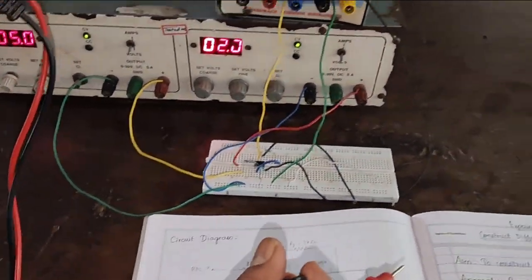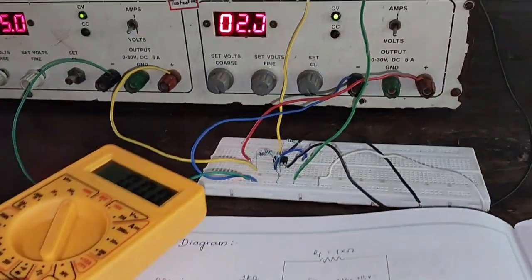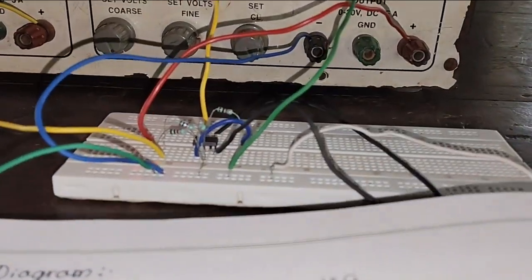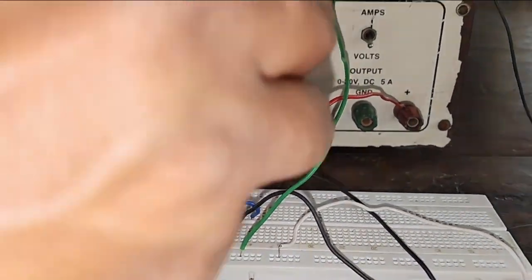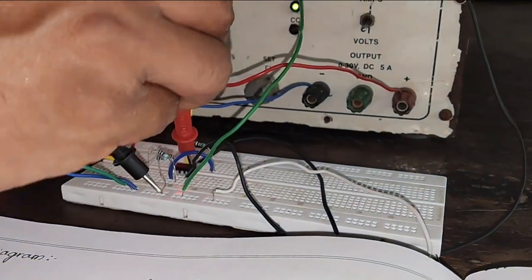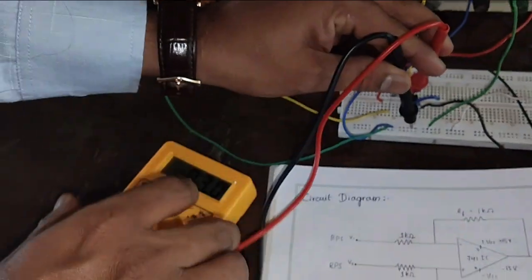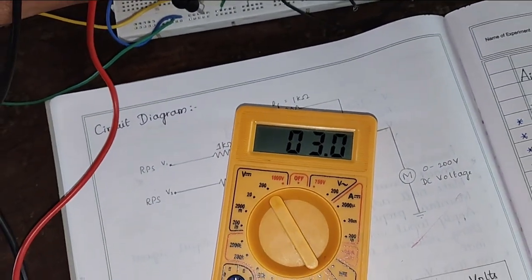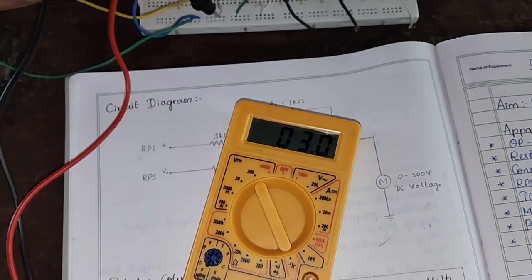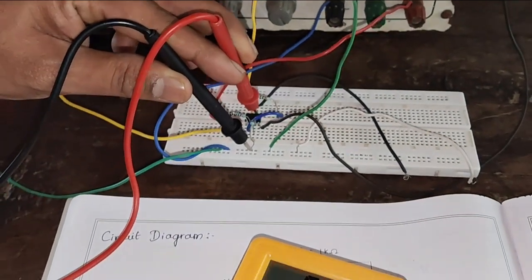Let's check the output voltage at pin number 6 with respect to ground. In multimeter we can observe that we are getting 3 volts. In this way we conduct subtractor or a difference amplifier using op-amp.